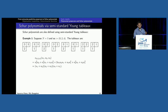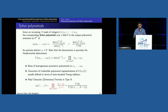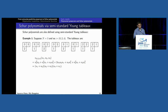It's a non-trivial result that Littlewood's definition is equivalent to Cauchy's definition. The Cauchy definition gives us that the Schur polynomial is symmetric and homogeneous. The Littlewood definition gives us that the Schur polynomial has integer positive coefficients. You can combine all of this, but it's a non-trivial fact to prove the two definitions agree. For those of you who have seen representation theory, this is the character of the adjoint representation of SL₃.